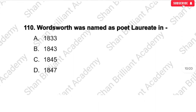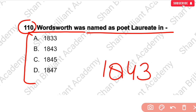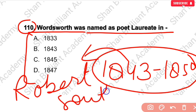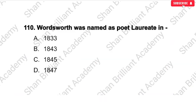MCQ No. 110: William Wordsworth was named as Poet Laureate in — ? He became Poet Laureate in 1843 and remained so until his death. Before him was Robert Southey, and after Wordsworth came Alfred Lord Tennyson.